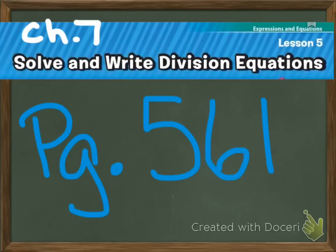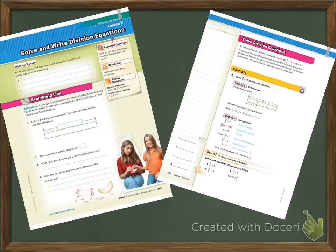All right, we're starting Chapter 7, Lesson 5: Solve and Write Division Equations. That starts on page 561, so you should have these pages in front of you to start taking notes.